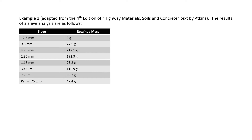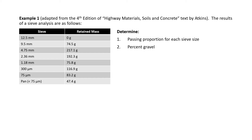Let's start with the MIT format, and then we'll do the USCS. First we'll determine the passing proportion of each sieve size, then from that we can plot the passing proportion against the diameter size of the particle. From that, we can read off the graph and determine the percent gravel, the percent sand, and percent fines. And then subsequently we can determine the MIT and USCS soil classification.